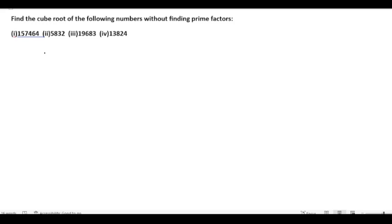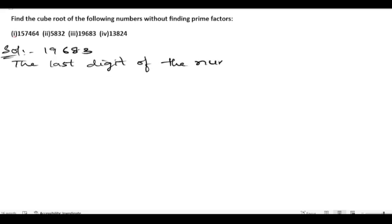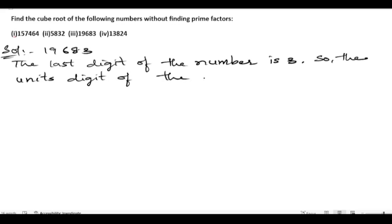Now let us solve the third example, that is 19683. The last digit of the number is 3. So the units digit of the cube root will be 7, because the cube of 3 is 27 and 7 cubed is 343, so we get units digit 3 for 7 and 7 for 3.